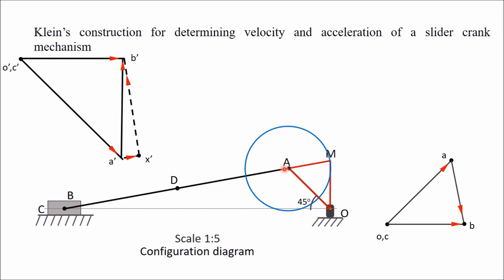Next, take the center point of the connecting rod AB — mark that as D — and from D as center with DA as radius, draw an arc which cuts the circle at two points. Mark these two points as K and L.